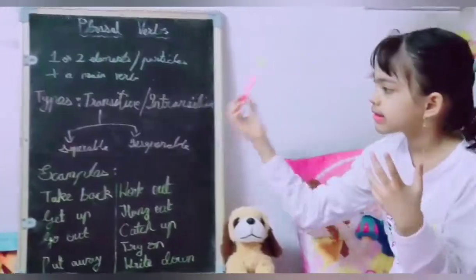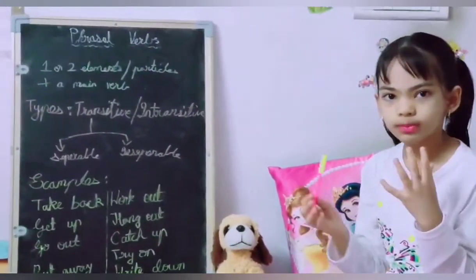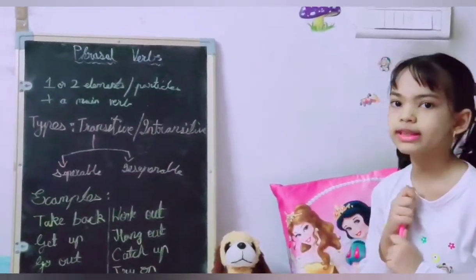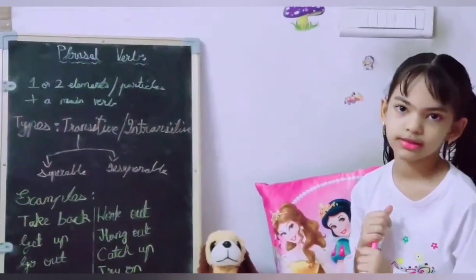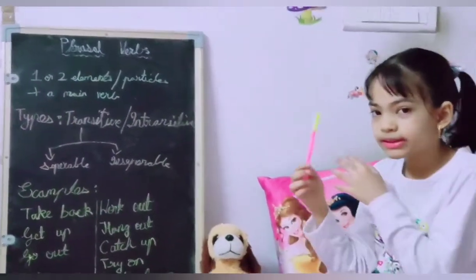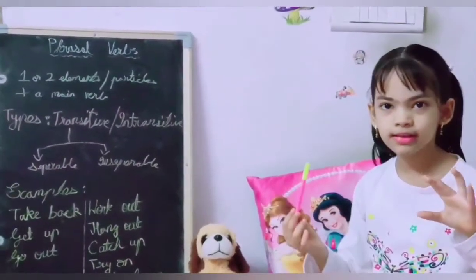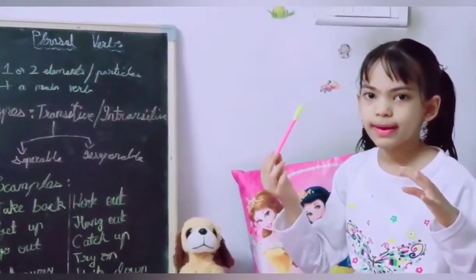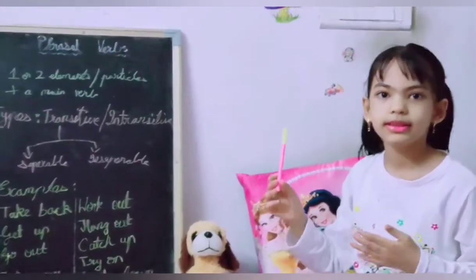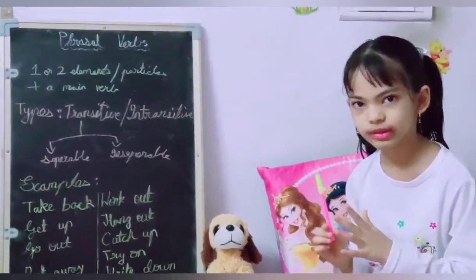Separable: the direct object can be placed within the phrasal verb, just like in 'put on.' I put on my jacket. We can also say 'I put my jacket on.' Both ways are meaningful — that's why 'put on' is a separable transitive phrasal verb.